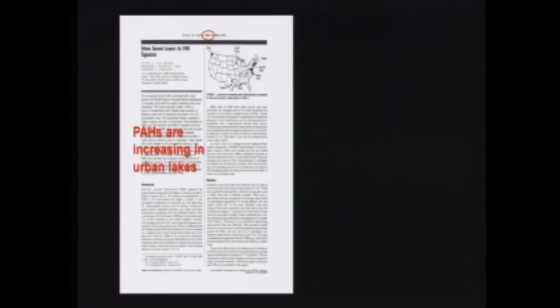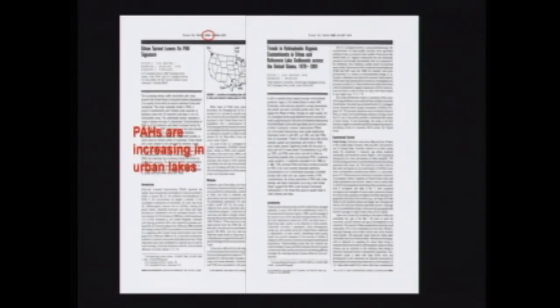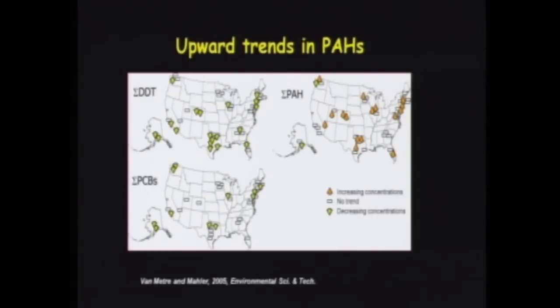We continued to analyze more cores from more lakes to get a better handle on this disturbing trend. In 2005, we published a study based on 38 lakes where we looked at a number of different carbon-based contaminants. PAHs were increasing while a lot of other contaminants were decreasing. Each one of those symbols is a lake where we collected a sediment core. The green arrows are downward trends since 1970, the white rectangles mean no statistically significant trend, and the orange up arrows are upward trends. These upward trends in PAHs really jumped out at us, and being the scientists and detectives that we are, we wanted to know why.